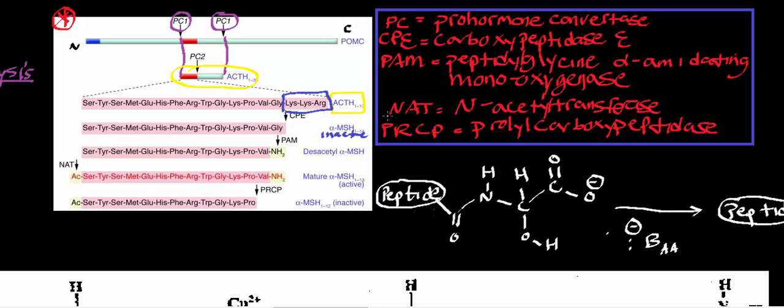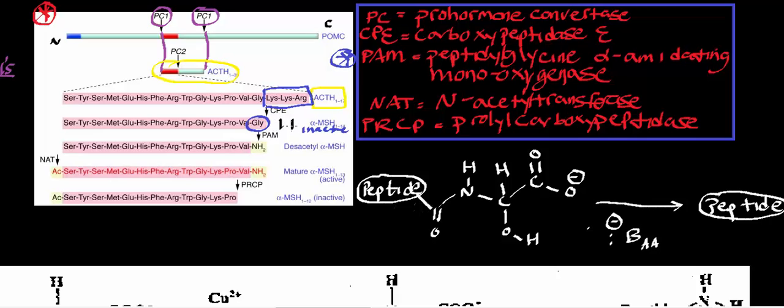Next we use an enzyme called PAM — peptidylglycine alpha-amidating monooxygenase. The inactive alpha-MSH is 14 residues long. PAM is a copper-dependent and ascorbate-dependent (vitamin C-dependent) enzyme. The amino acid directly on the N-terminal side of the C-terminal glycine is a valine residue. The 'monooxygenase' in the name indicates that we're going to monooxygenate the alpha-carbon of glycine.